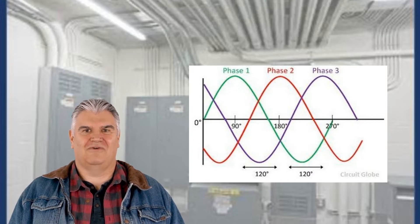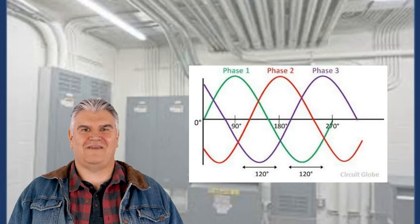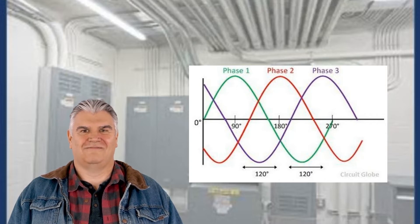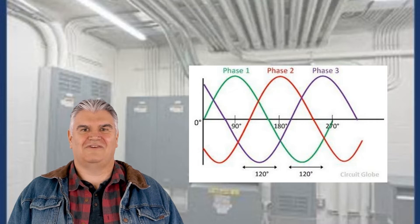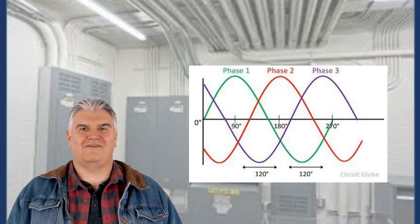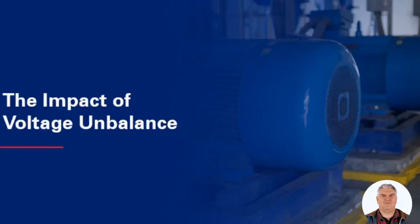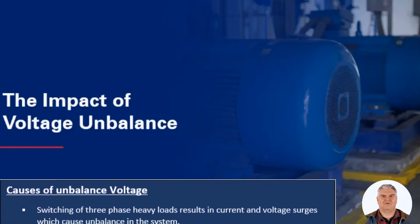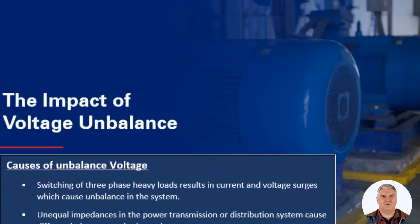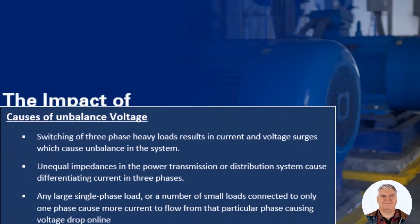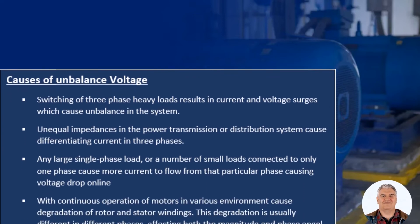If three-phase voltages have the same magnitude and are in exactly 120 degree phase displacement, then the three-phase voltage is called balanced; otherwise, it is unbalanced. There are numerous causes of unbalanced voltage in an electrical system. For instance, three-phase equipment such as induction motors and transformers with unbalance in its windings, and unequal transformer tap settings.